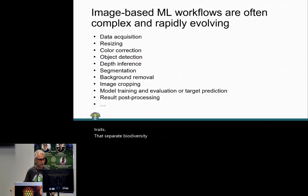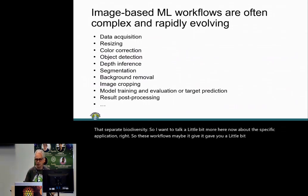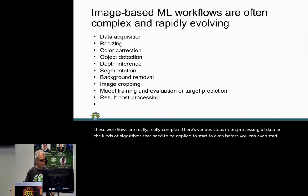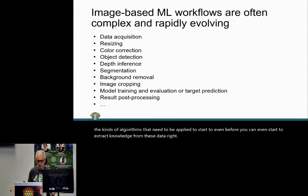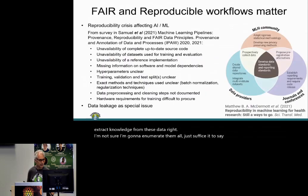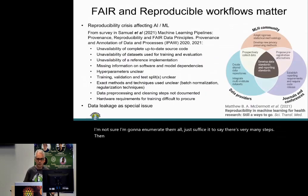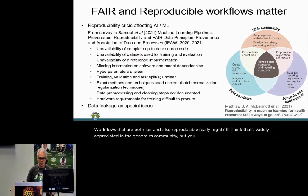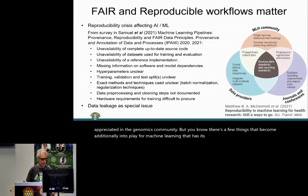These workflows are really complex. There are various preprocessing steps and algorithms that need to be applied before you can even begin to extract knowledge from the data. Workflows that are both FAIR and reproducible really matter — that's widely appreciated in the genomics community. But machine learning has its own reproducibility crisis, from things like hyperparameters not being given and data splits not being clear.